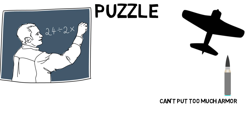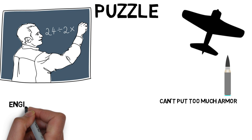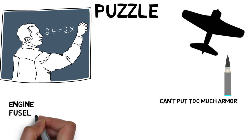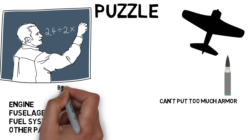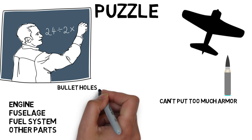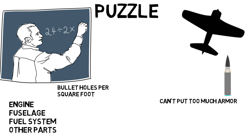They can only put armor over certain regions. As a mathematician, you analyze all the big parts of the plane, including the engine, fuselage, fuel system, and other less important parts, and you measure the bullet holes per square foot so you can see which part is taking the highest density of shots.